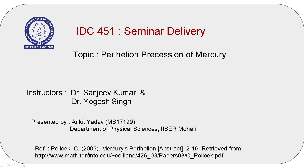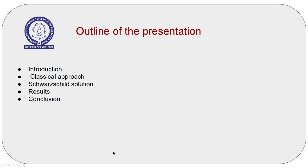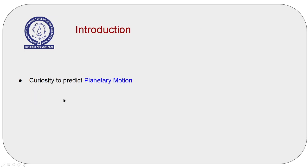This is the reference of my presentation, and this is the outline of my presentation. I will shortly introduce the historical background which led to solving the mysterious perihelion precession of Mercury. I will shortly review the classical approach to calculate the trajectory of Mercury. After that, I will review the Schwarzschild solution, which is indeed the solution of general theory of relativity. After that, I will discuss the result plotted by me using the prediction of the general theory of relativity, and after that I will conclude my presentation. Okay, let's start with the introduction.